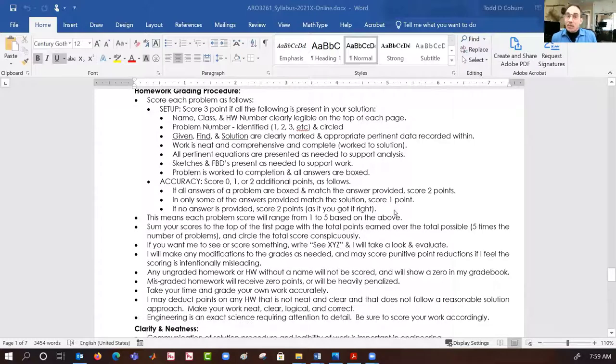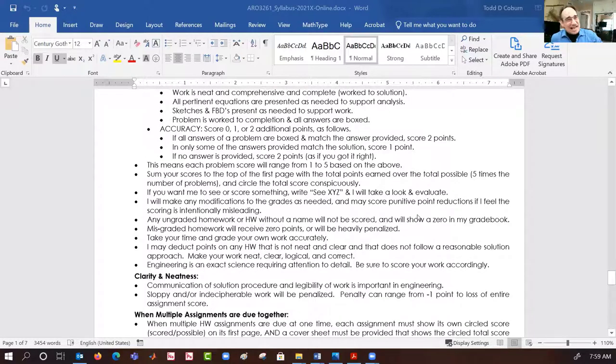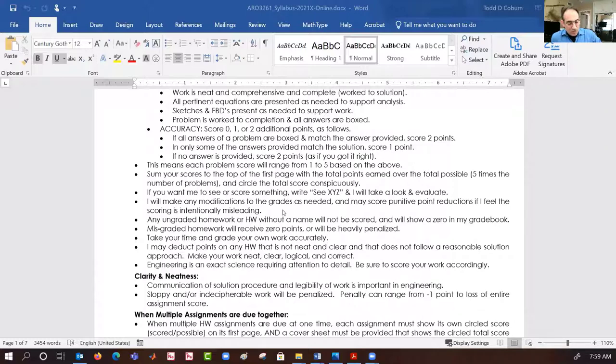Basically, in summary, you're going to get up to five points per problem, typically, and then you're going to sum those up and tell me what the total score is in a specific way where you're giving me the number of points you're claiming over the number of points possible, and that needs to be circled. It needs to be a different color ink or pencil than what your other work is so I can understand it. Once again, if your homework is not clear, it's going to be penalized. Now, the intent of this is not to cause a lot of anxiety. So if you think you scored it correctly, I want you to use your judgment and score it the way you think it's correct.